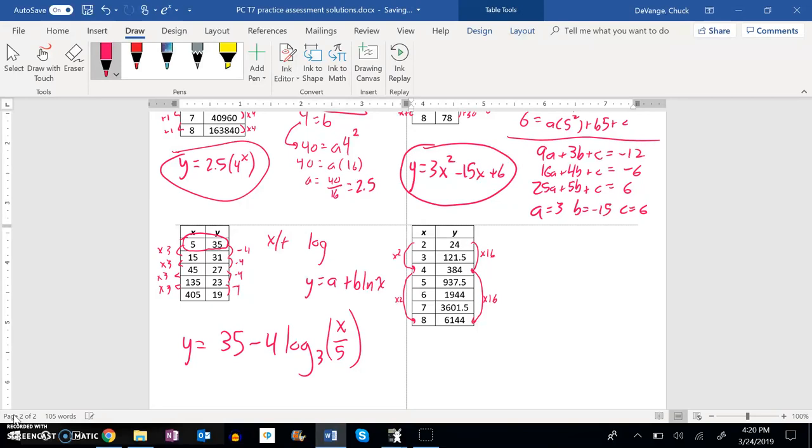Yeah, I think this is a multiply-multiply one. Let me check it. 3 to 6 is times 2. 121.5 times 16 is, yeah, is 1914. This is a multiply-multiply. So this is a power relationship.